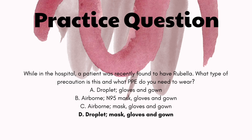A says droplet, gloves and gown — even if you don't know what rubella is, these don't go together because with droplet you also need a mask. Gloves and gown alone are contact precaution. B says airborne, N95 mask, gloves, and gown — those are correct for each other, but you need to know what precaution rubella requires. C says airborne, mask, gloves, gown — incorrect, because with airborne you need an N95, not just a regular mask. D says droplet, mask, gown, and gloves — those line up and are correct. So you can narrow it down to B or D immediately, giving you a 50-50 chance if you don't know rubella's precaution category.